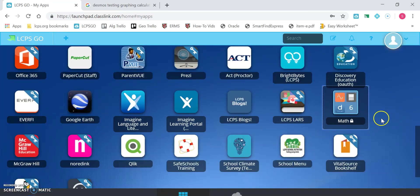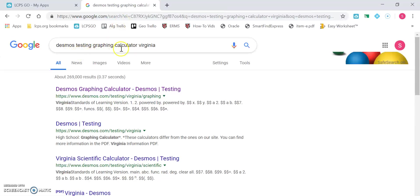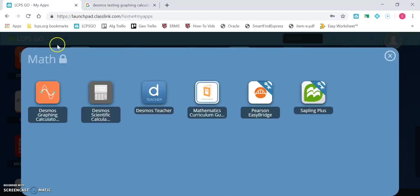If you're one of my students, you're going to go to LCPSGO and log in. You're going to go to the math folder. You're going to see a few things in here. The scientific calculators for math 6, math 7, math 8 - we're not going to worry about that. The thing you're going to be using is the Desmos graphing calculator. If you can't get to it that way, you could always Google Desmos testing graphing calculator and then whatever state you're in. The reason I'm doing testing graphing calculator is because these are the functions that are available on the Desmos calculator when you're taking some kind of standardized test. It's different for different states. I'm going to go in through the app, which is right here.